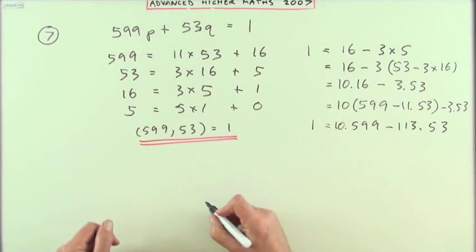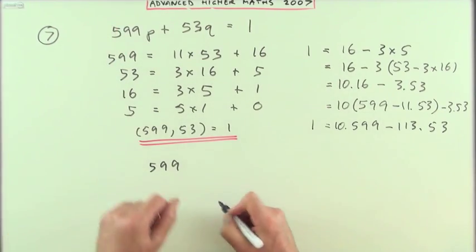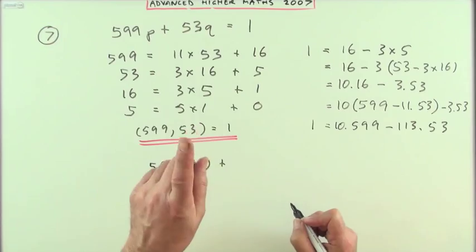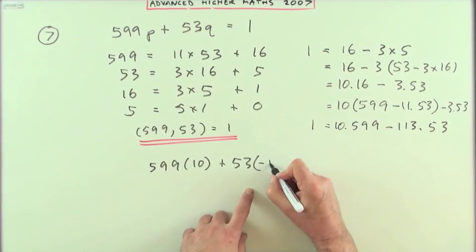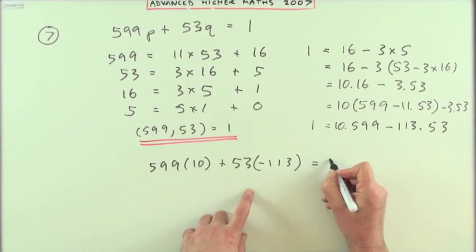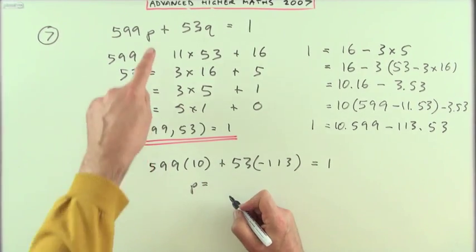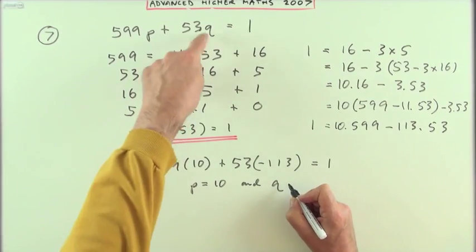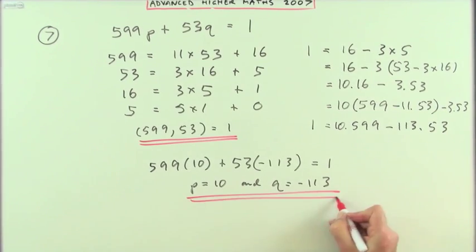So I can go back to this equation. Just write this out the way it is. The original equation was 599 times something, 599 times 10, plus 53 times something. So it must be 53 times negative 113. And that does in fact make 1. So the solution that we're looking for was p was the 10 and q was negative 113.